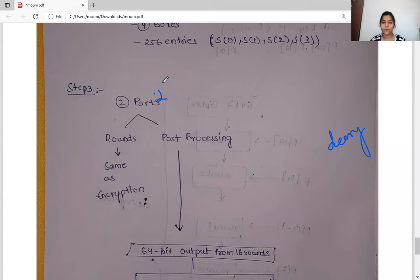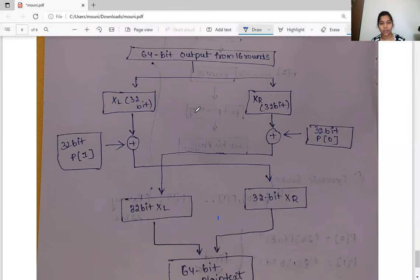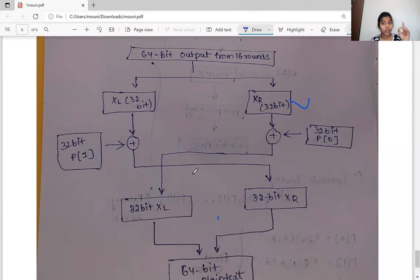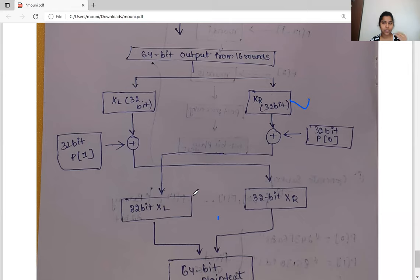In post-processing for decryption, we take the 64-bit output from the 16 rounds and divide it into two 32-bit halves. Since we are doing the reverse of encryption, instead of using P17 and P16, we now use P1 and P0. We perform XOR operations and swap the halves, mirroring the final step of encryption. After combining both 32-bit halves we obtain the 64-bit plaintext. This completes the Blowfish decryption process.